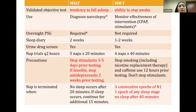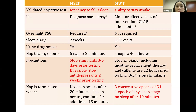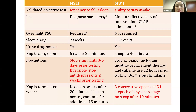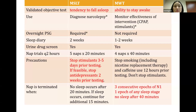For MSLT, an overnight PSG is required; for MWT it is not. A two-week sleep diary is requested to ensure adequate sleep before testing, and a urine drug screen is done on the day of testing to rule out drug-induced hypersomnolence. Patients have nap trials every two hours — five naps of 20 minutes for MSLT, and four naps of 40 minutes for MWT. For MSLT preparation, stimulants are stopped three to five days prior if feasible, and antidepressants two weeks prior. For MWT, smoking and caffeine are stopped 12 hours prior; stimulants are not stopped because we are monitoring their effectiveness.